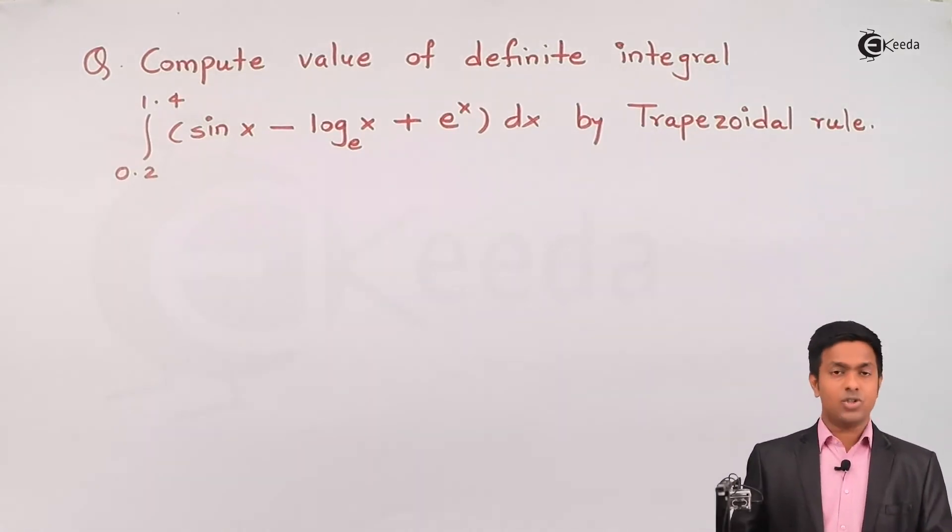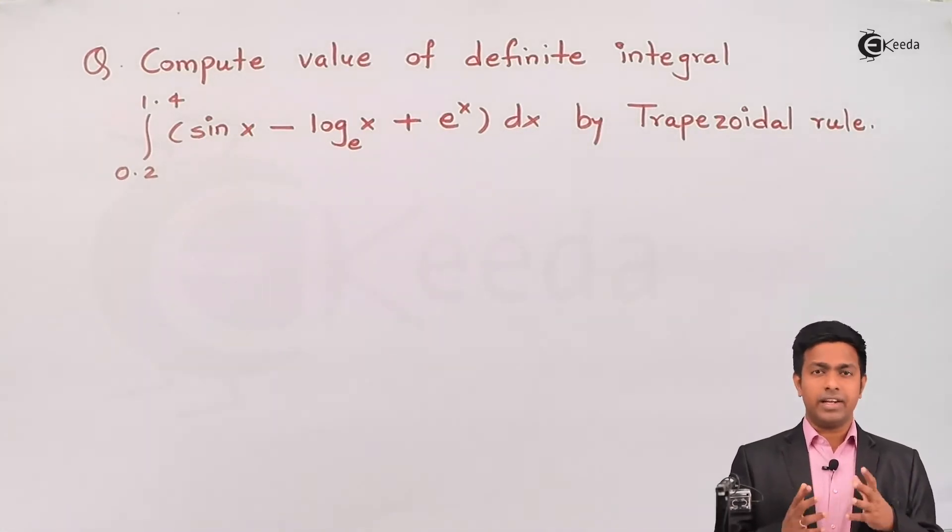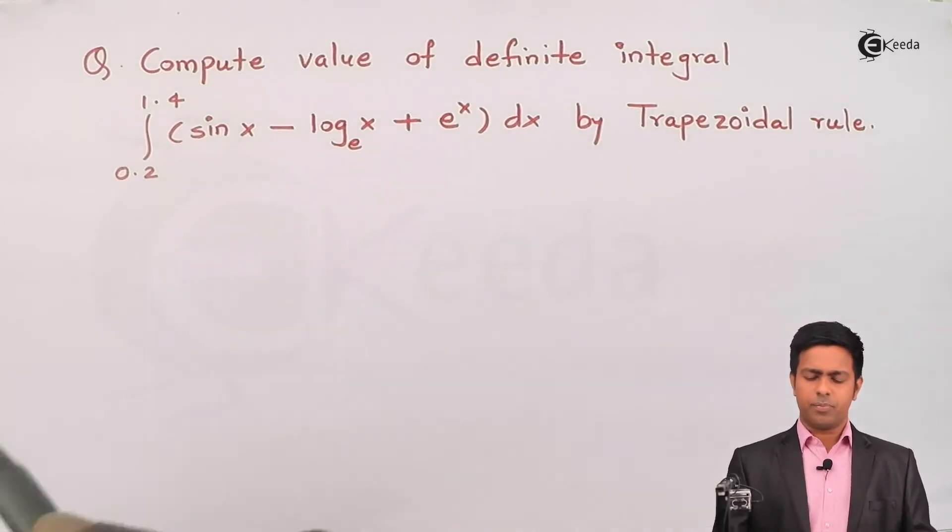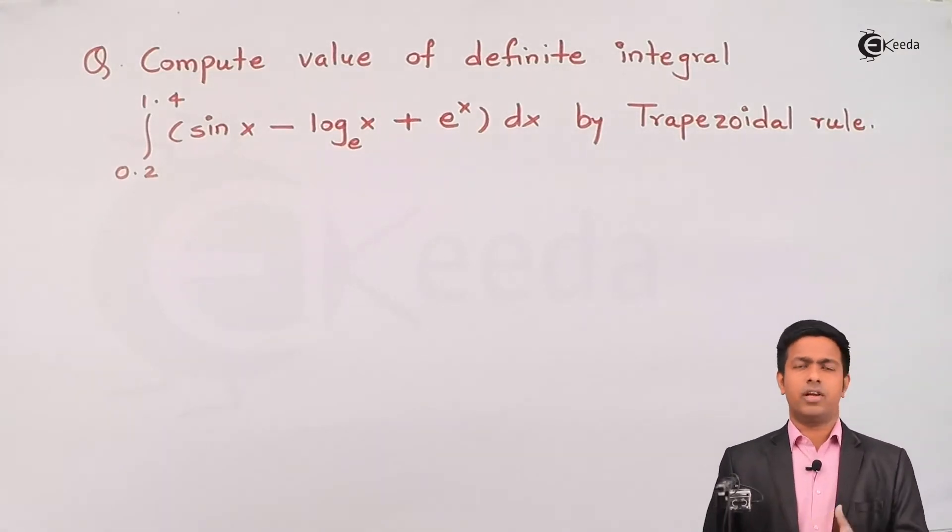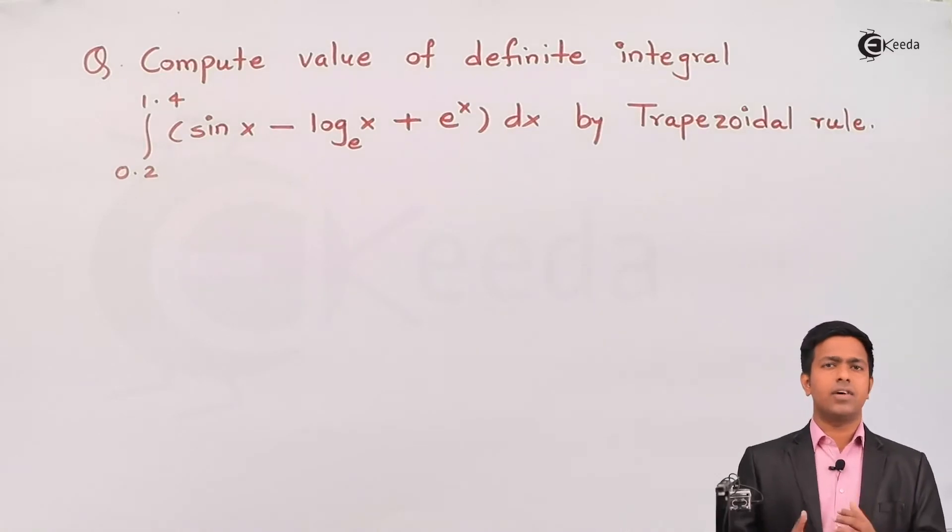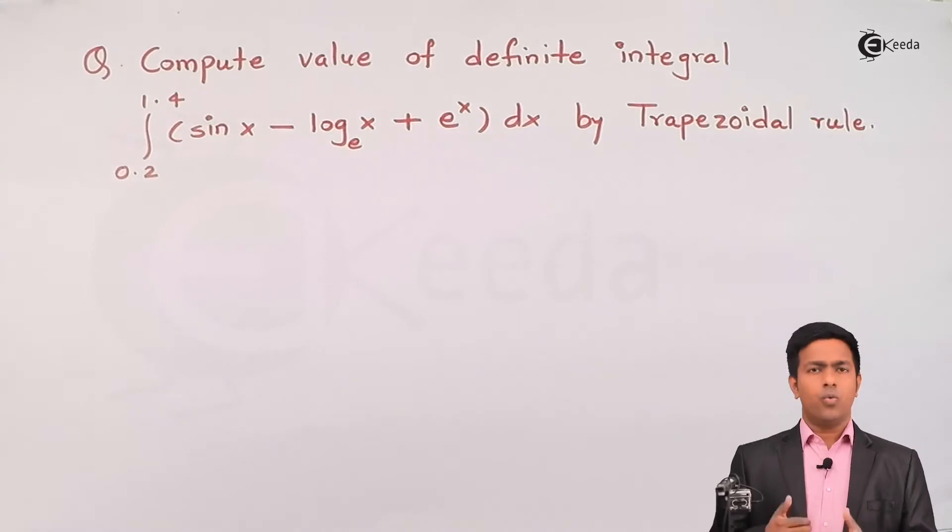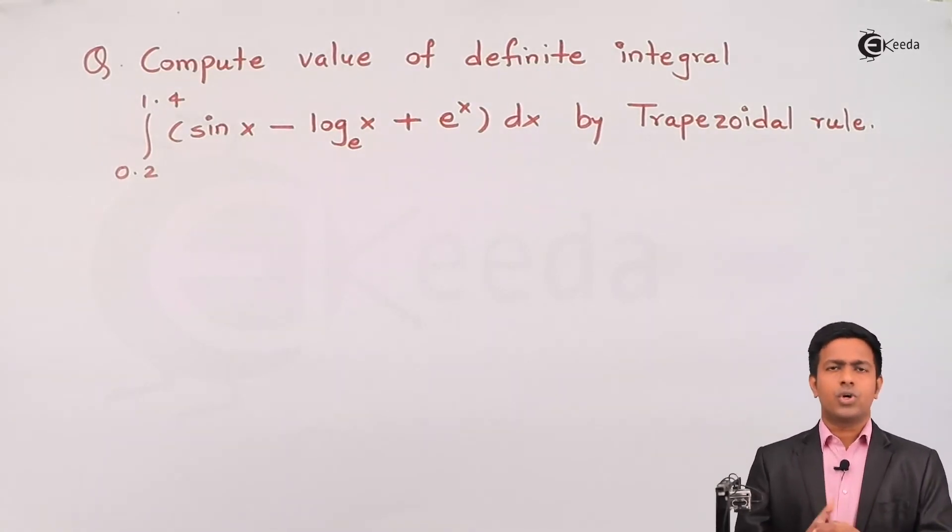So you all know that we use trapezoidal rule to evaluate the integration when we have the values or certain intervals between the endpoints. Here the endpoints are 0.2 and 1.4. Now the intervals are not given and also the value of the function at that interval is also not given, so we will consider that interval and find out the value of the given function at each and every interval, and then we'll apply the formula of trapezoidal rule to get the answer.